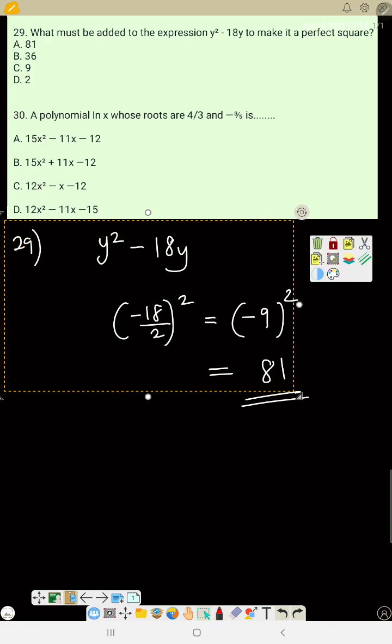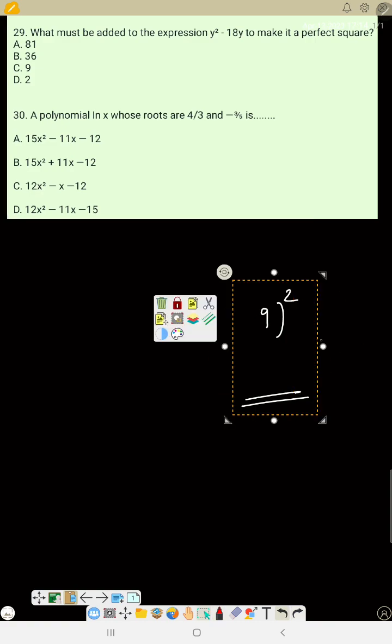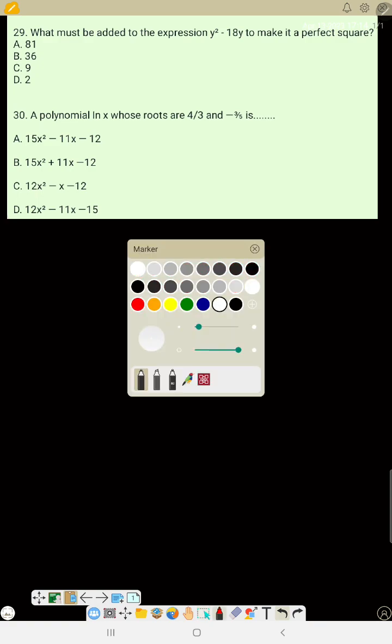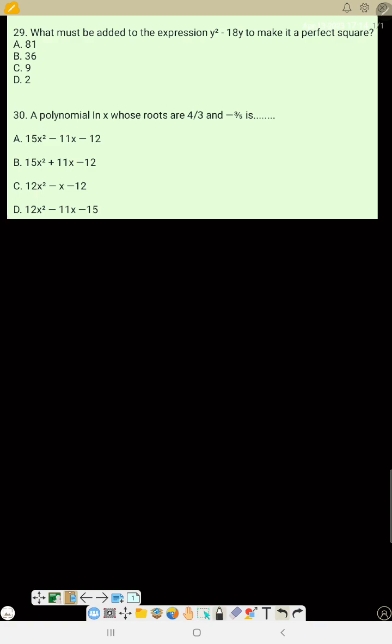Now number 30: A polynomial in x whose roots are 4 over 3 and minus 3 over 5. Let alpha be 4 over 3 and beta be minus 3 over 5.